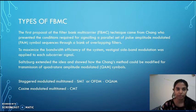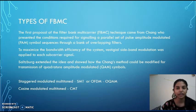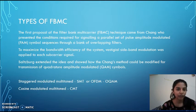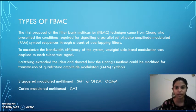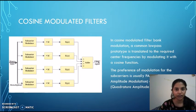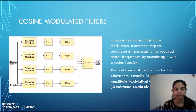There are different types of FBMC. The first technique, FBMC, originated from Chang, who presented the conditions required to signal a parallel set of vestigial amplitude modulated signal sequences. To maximize bandwidth efficiency of the system, VSB modulation was applied to each sub-carrier signal. Salzburg extended the idea and showed how the Chang method could be modified for transmission of QAM symbols. Cosine modulated filter is another type of FBMC, where a low-pass filter prototype is translated to the required center frequencies by modulating with the cosine function.